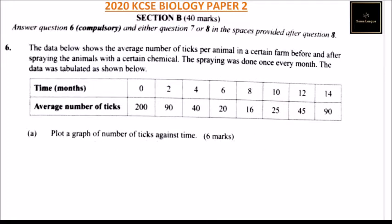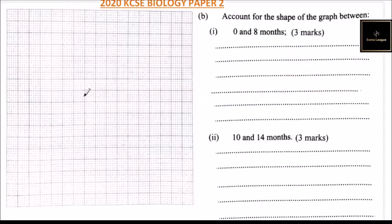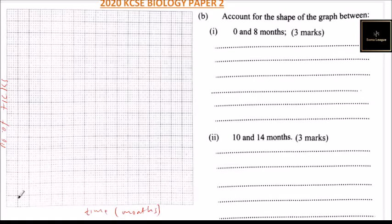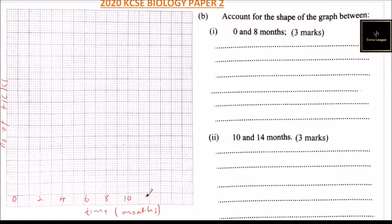Due to space constraints I'll use these values to plot the graph on the grid provided. The y-axis is labelled 'Number of ticks' and the x-axis is labelled 'Time in months'. The x-axis has values: 0, 2, 4, 6, 8, 10, 12, and 14 months.